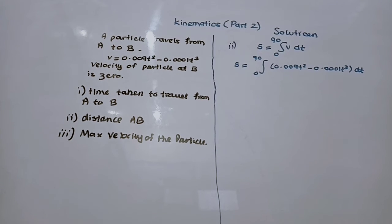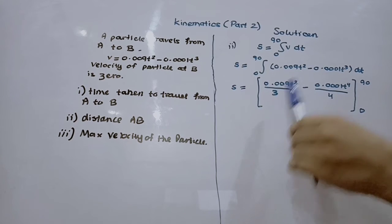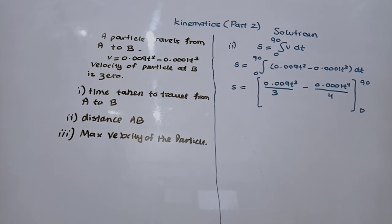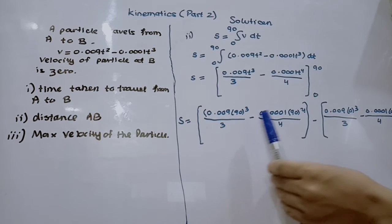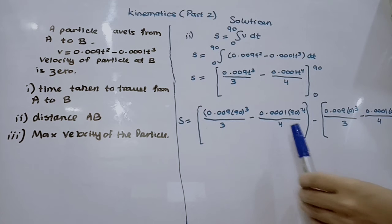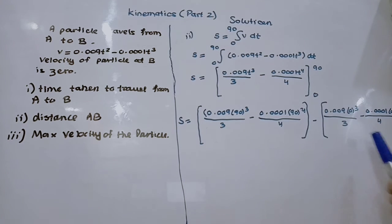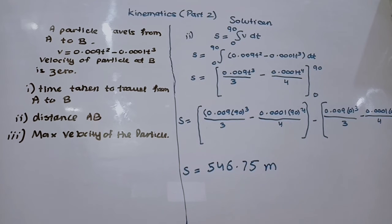I have plugged the limits into the velocity expression and integrated it. The expression integrates to 0.009 × t³/3 minus 0.0001 × t⁴/4. Substituting t = 90 gives 0.009 × (90³/3) − 0.0001 × (90⁴/4), minus the value at t = 0. Putting this into the calculator gives the distance AB = 546.75 metres.